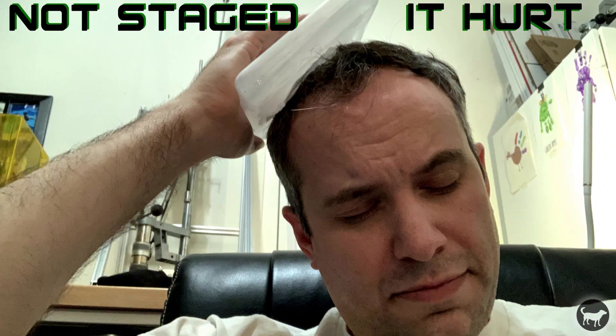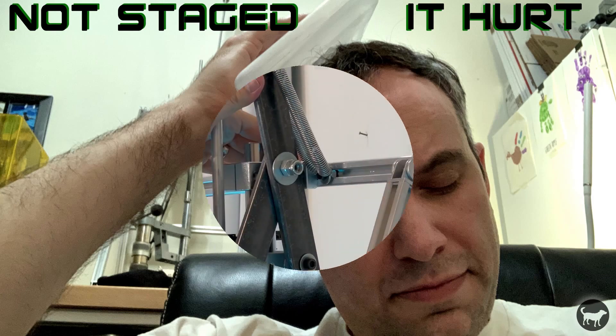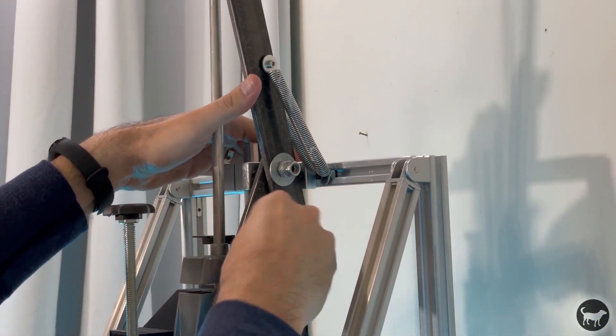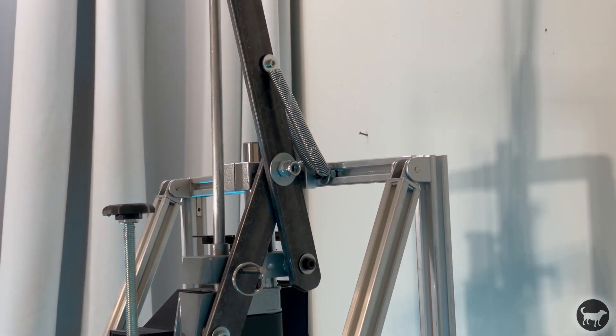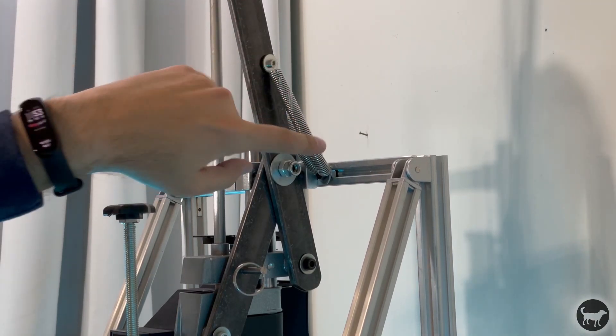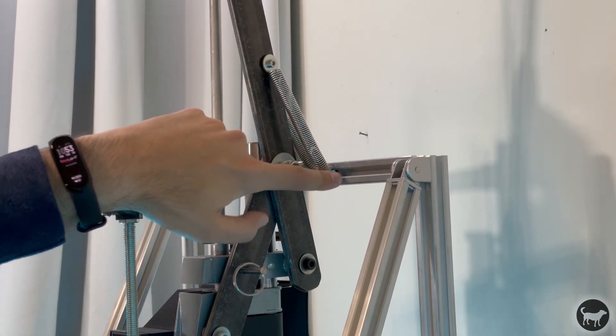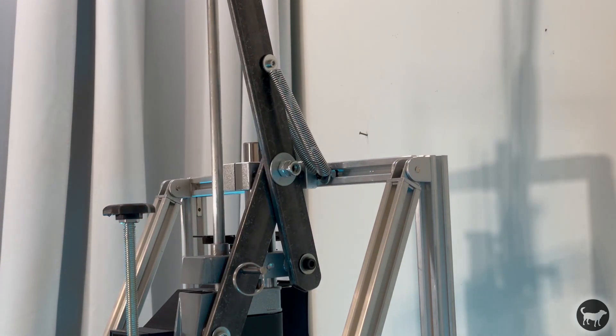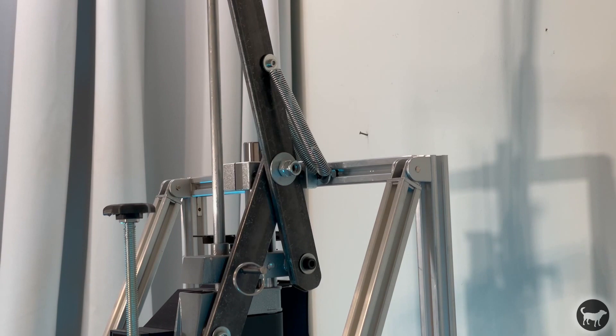I just drilled a hole through the lever itself and then had a T-nut where I bolted the two springs to it. It's a pretty simple thing to do and it just gives an extra layer of security to make sure that it doesn't come crashing down on you.